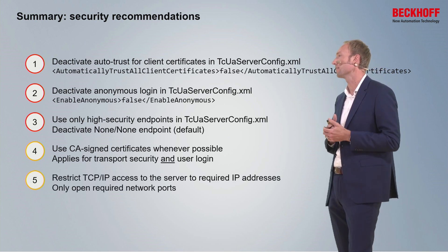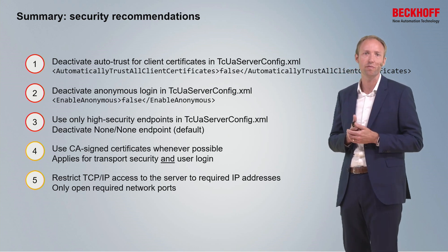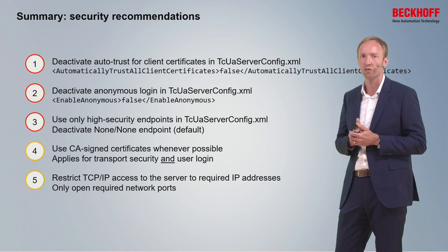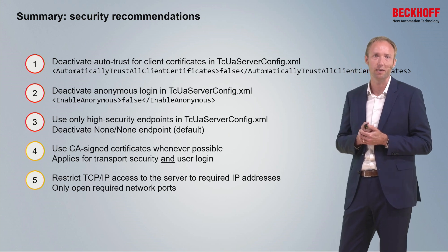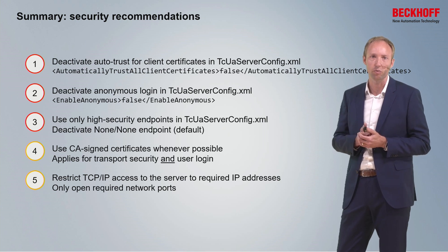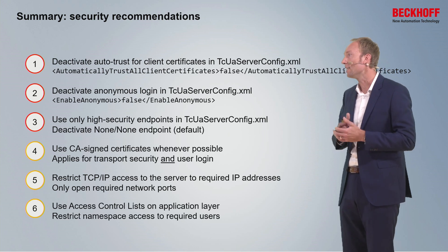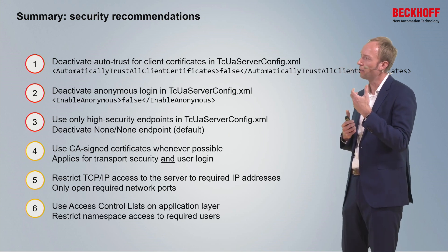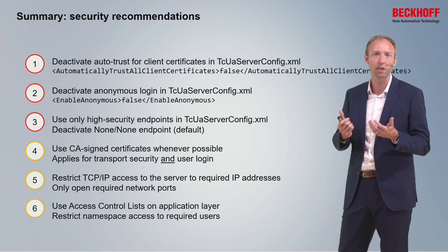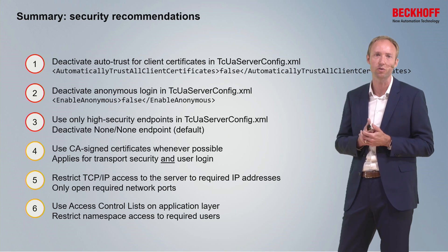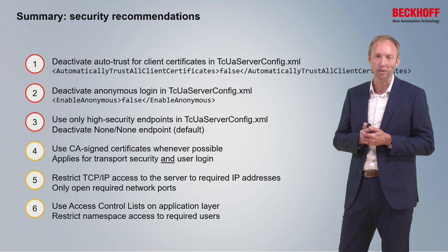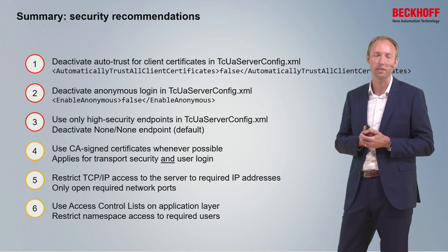Fifth, restrict TCP/IP access only to required IP addresses — for example, only the IP address of your OPC UA client. The Windows operating system and TwinCAT BSD give you plenty of options to configure the corresponding firewall. Finally, give access control lists careful consideration — it is possible to restrict access on namespace level or node level to certain users or user groups, as shown in the TwinCAT OPC UA configurator, giving you fine-grained control over what information is shared on your TwinCAT OPC UA server.